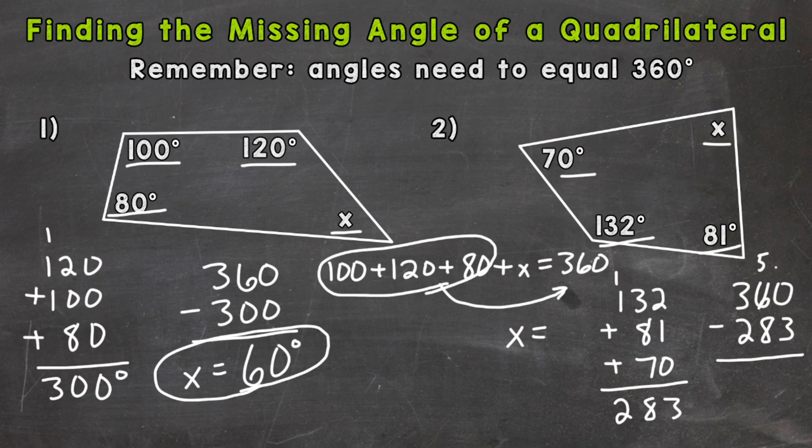So a little bit of borrowing action here, and we get 77 degrees. So x equals 77 degrees.